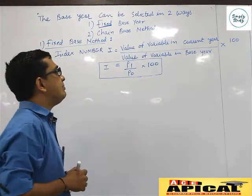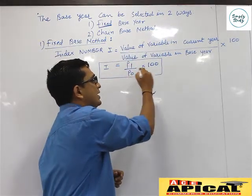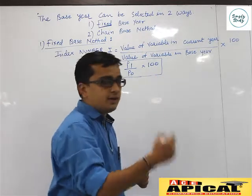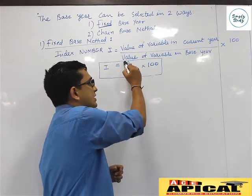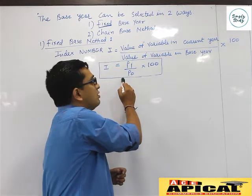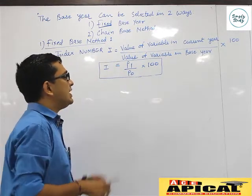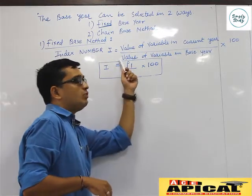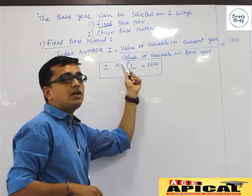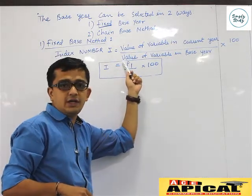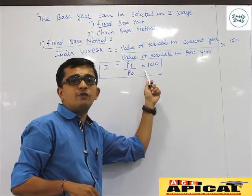Statistically it can be written as P1 upon P0 into 100, where P1 stands for the value of the variable of the current year and P0 stands for the value of the variable of the base year.